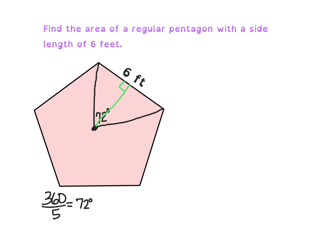Let me create another triangle off to the side so you can see what we're looking at. What's different about solving this one is we're going to have to use trig, since it's not an easy 30-60-90 or 45-45-90 triangle. Since we bisect the side, I have a side length of 3 feet. And we're also going to bisect the angle, so instead of 72 degrees, that's going to be 36 degrees. So you want to ask yourself: what trig function should I use?